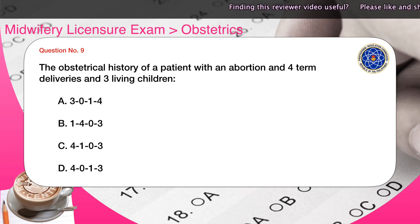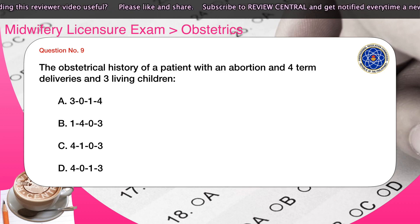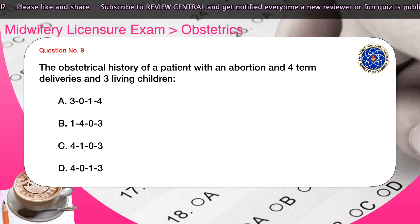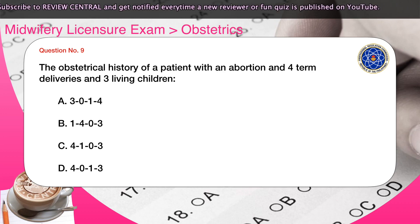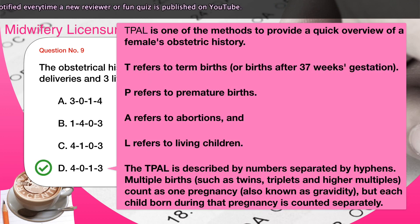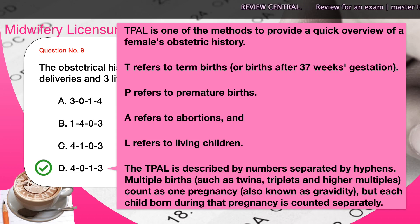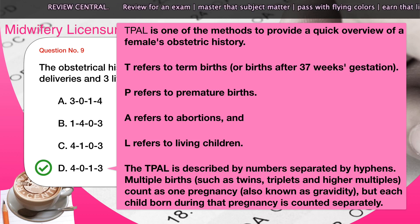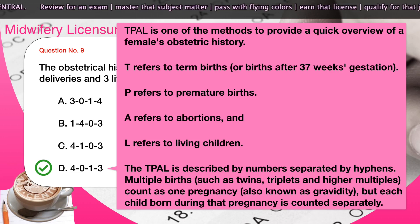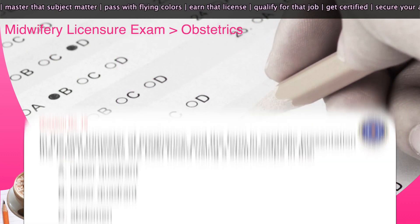Question number nine: The obstetrical history of a patient with one abortion and four term deliveries and three living children — A) 3-0-1-4, B) 1-4-0-3, C) 4-1-0-3, D) 4-0-1-3. The correct answer is D. TPAL is a method to provide a quick overview of a female's obstetric history: T refers to term births (after 37 weeks gestation), P refers to premature births, A refers to abortions, and L refers to living children. Multiple births count as one pregnancy but each child born is counted separately.